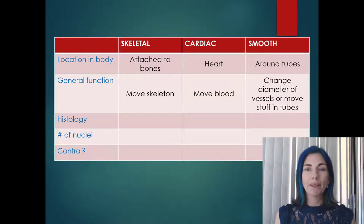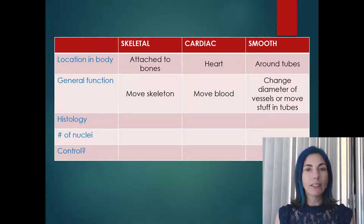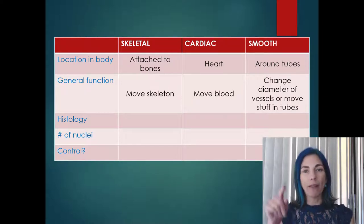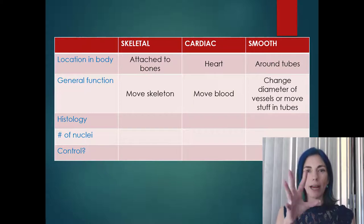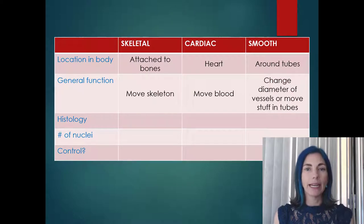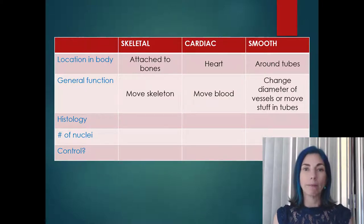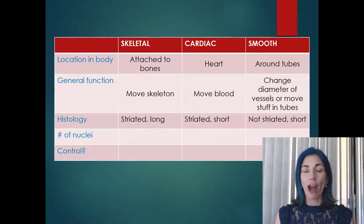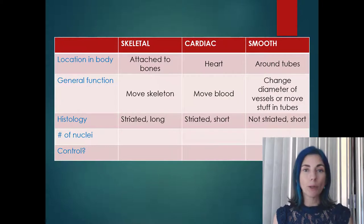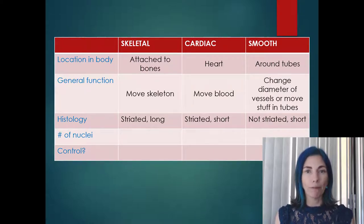Now for anatomy: skeletal muscle and cardiac muscle both fall under a category known as striated muscle, which has a banding pattern — a light-dark-light-dark look under a microscope. Smooth muscle is not striated; that's where the term 'smooth' comes from, because under a microscope it looks continuously the same color. Skeletal muscle cells are quite long — they can be as long as a bone — while cardiac and smooth muscle cells are much shorter.